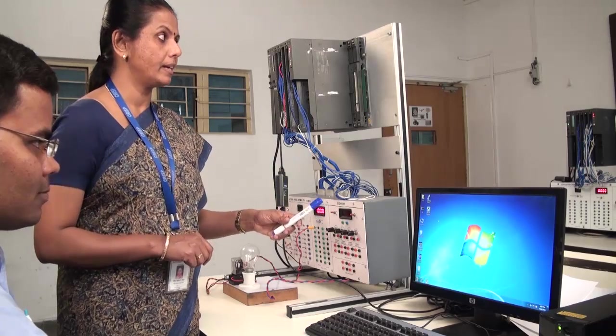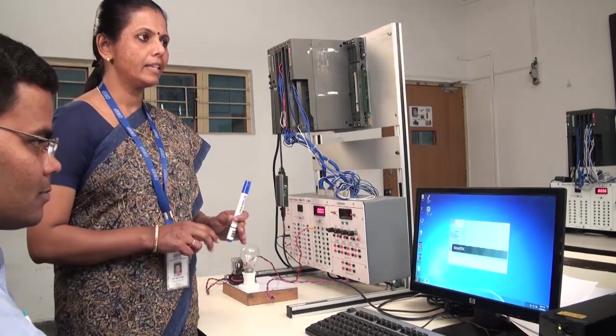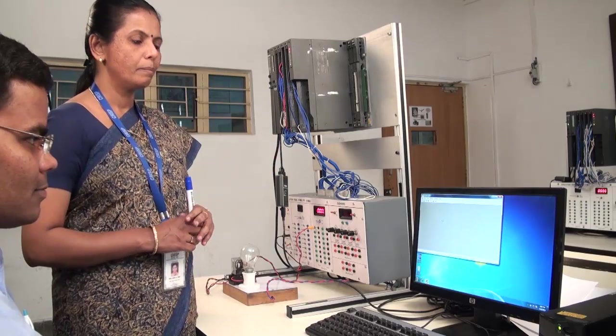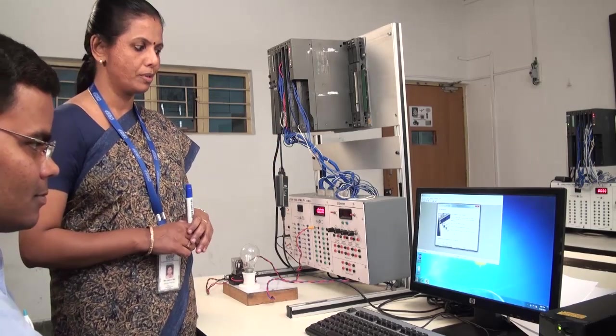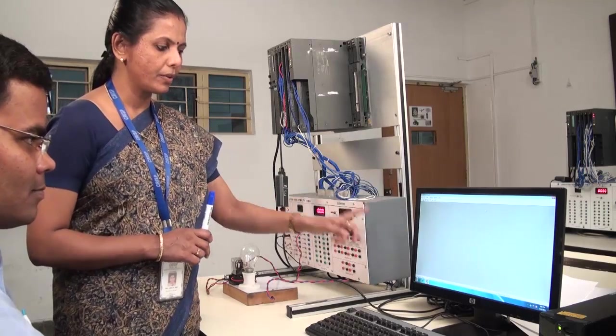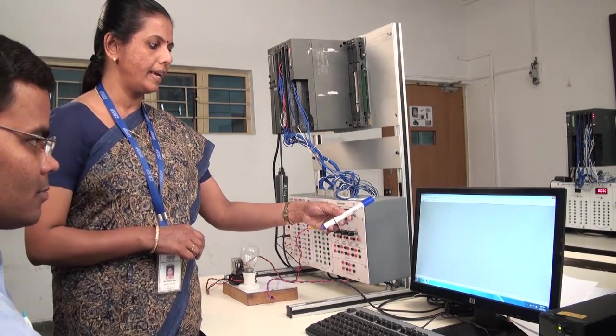As mentioned in the task earlier, first we have to open software SIMATIC manager and then check the communication between PLC and PC by checking the accessible nodes. This is the main screen of the software.